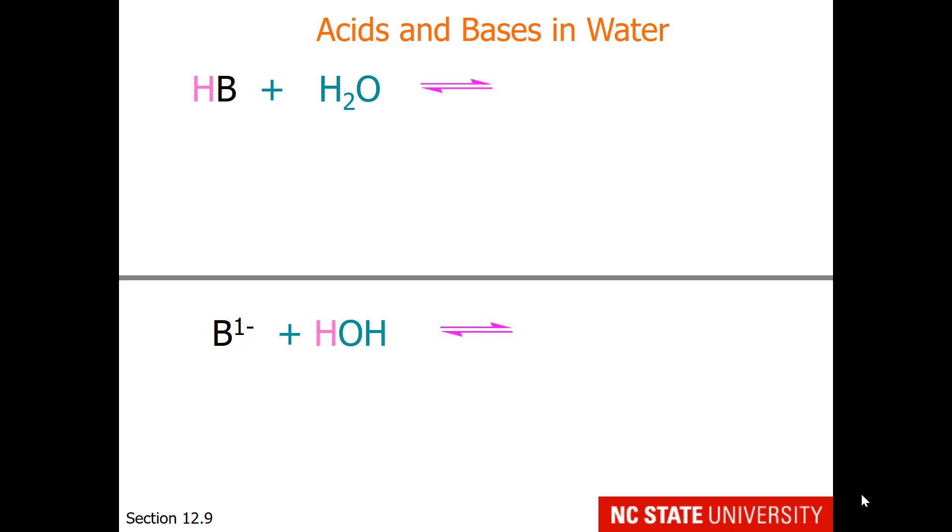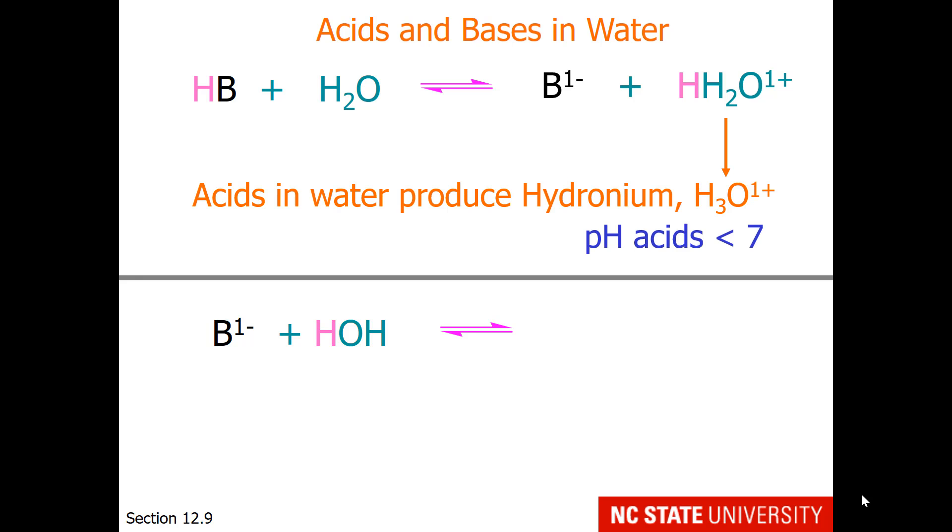First, I want to review the reactions of acids and bases in water. For the top reaction, we have an acid in water. In water, acids react to give up their proton and make hydronium. So the pH of acidic solutions would be less than 7.